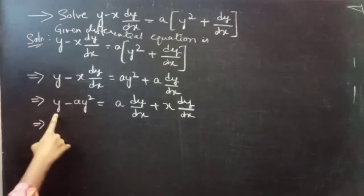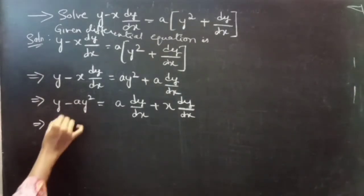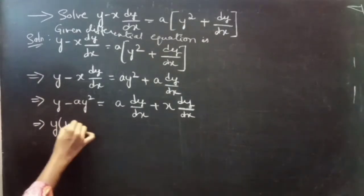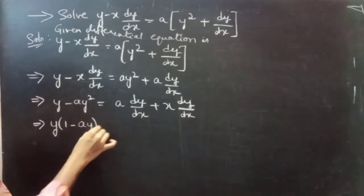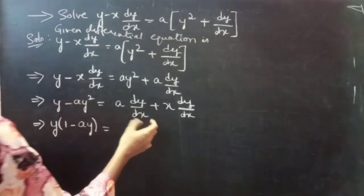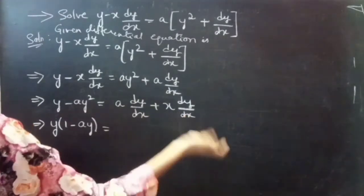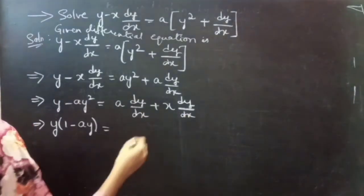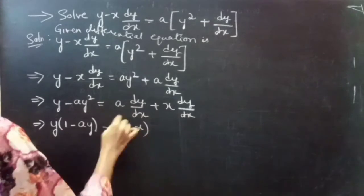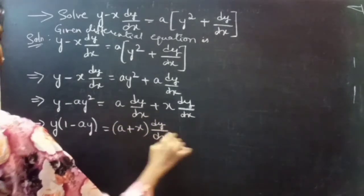Taking the dy/dx term to the right-hand side and the ay squared term to the left-hand side, we get y minus ay squared equals a into dy/dx plus x into dy/dx. Since we have y in both terms, we take y common: y into (1 minus ay). And since dy/dx appears in both right-hand side terms, we take dy/dx common: (a plus x) into dy/dx.